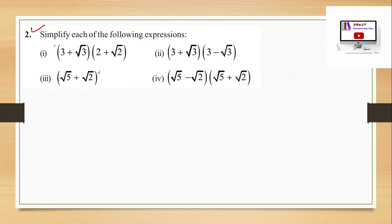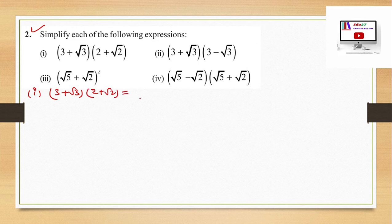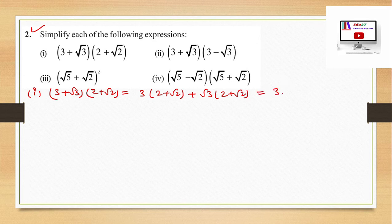Question 2: Simplify each of the following expressions. Part 1: (3 + √3)(2 + √2). We can expand this as 3 multiplied by (2 + √2), plus √3 multiplied by (2 + √2), which gives 3×2 + 3×√2 + √3×2 + √3×√2.